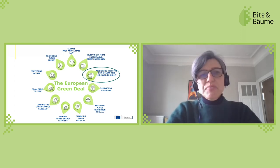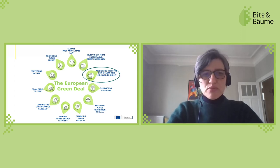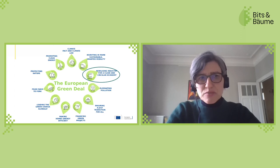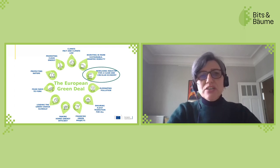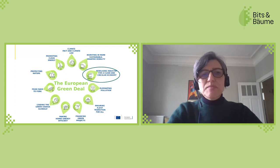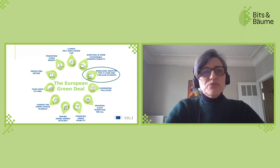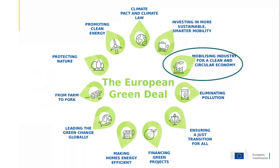The European Green Deal was issued as the programmatic policy program of the Von der Leyen Commission in December 2019. It covers many different areas: from climate, to justice, to pollution, to farm to fork. One of its main pillars is mobilizing industry for a clean and circular economy, which is one of the big driving pillars of the European Green Deal overall.